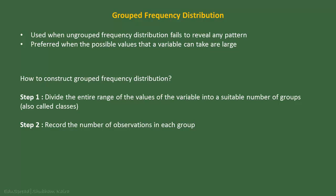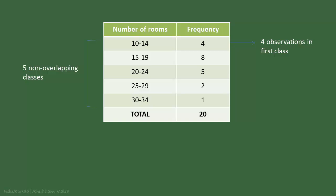These groups are called classes. Once we have made these groups, we then record the number of observations in each group. Let's continue with our example of 20 hotels with number of rooms as the variable to see how grouped frequency distribution looks like. As you can see, I have created 5 classes here. Note that these classes are non-overlapping. The first class is 10 to 14; in this class, we have 4 observations as there are 4 hotels that have rooms between 10 to 14. The second class is 15 to 19; in this class, we have 8 observations, as we have 8 hotels with number of rooms between 15 and 19, and so on.